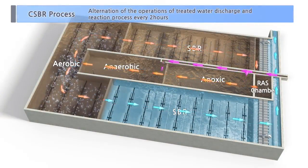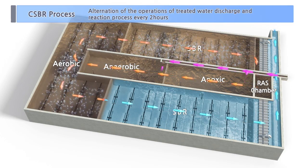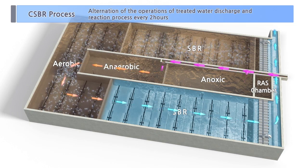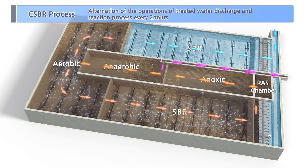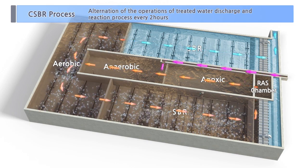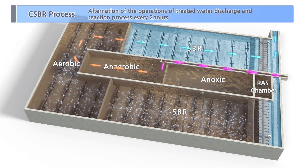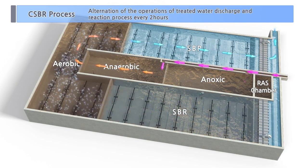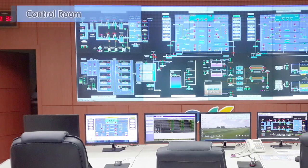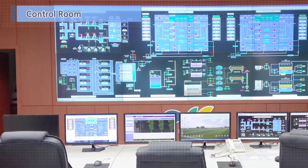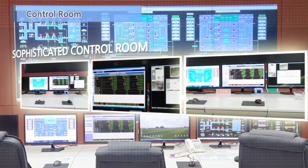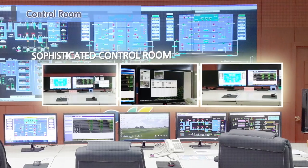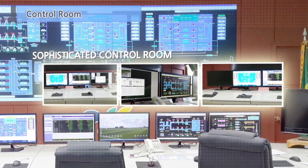Looking at the whole CSBR process: the A2O process of the anoxic, anaerobic, and aerobic cells operates 24 hours, while the two SBR cells alternately operate the discharge of treated water and reaction process for 2 hours per cycle. A PLC program automatically operates all the processes. The operator is able to work with the optimum condition suitable for the plant characteristics by adjusting operating conditions and checking the operation status through the monitor in the control room.